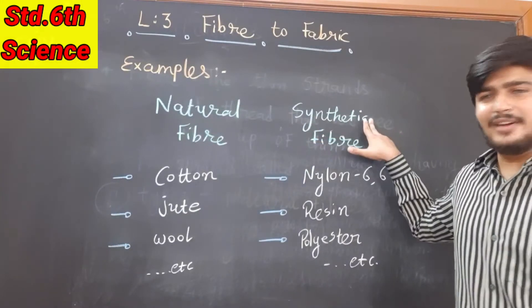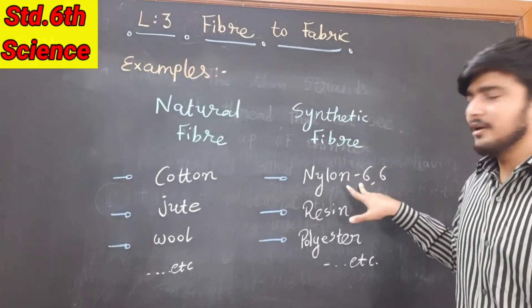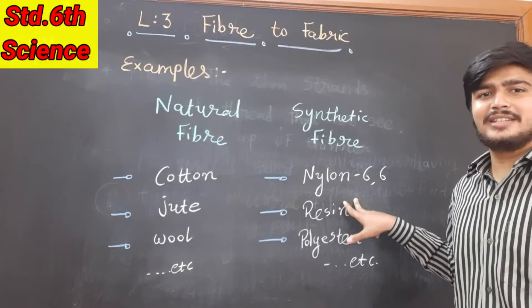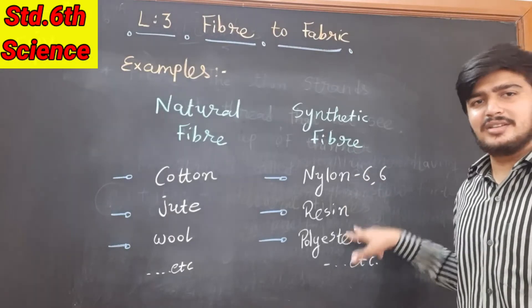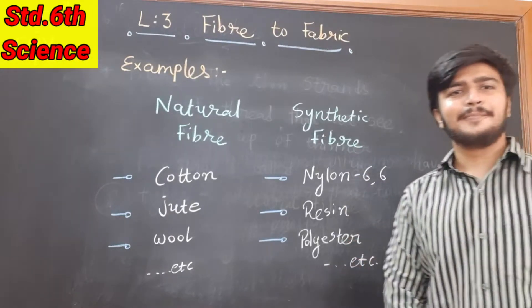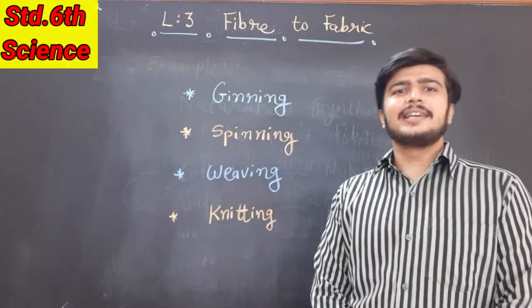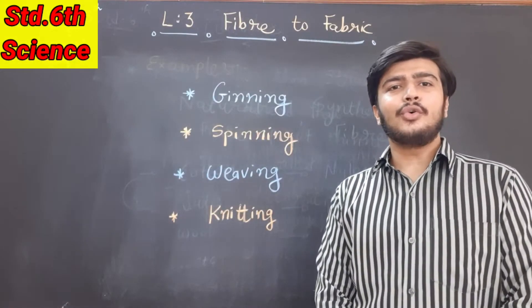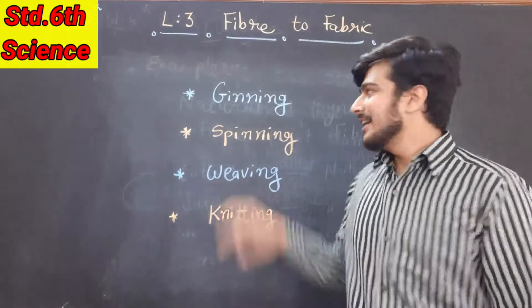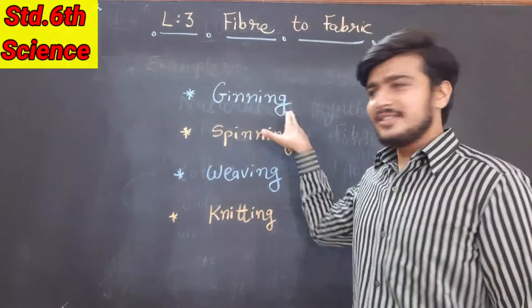In the synthetic fibers we have nylon, rayon, polyester, etc. In lesson three there are mainly four processes: ginning process, spinning process, weaving process, and knitting process.